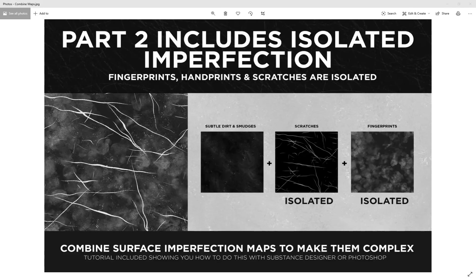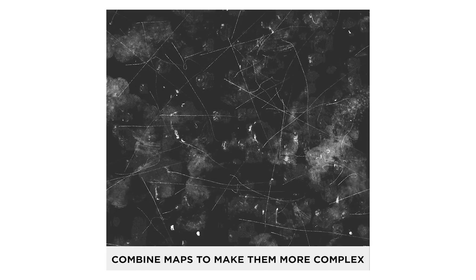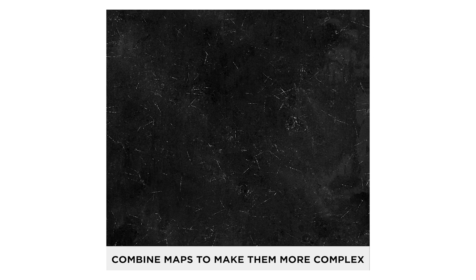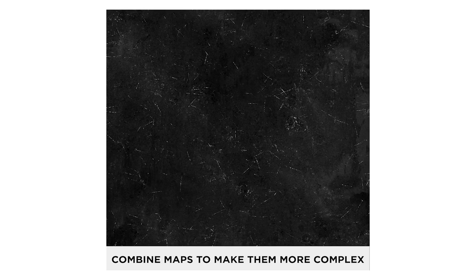On the topic of isolated maps, here's an example of combining three different categories together. You can use these resources to create more complex maps — if you want to add scratches onto a subtle dirt and smudges map, you can do that very quickly and easily with Substance Designer, which gives you more options than Photoshop. You're not just getting 50 maps — you can turn 50 into 100 depending on what you decide to combine.